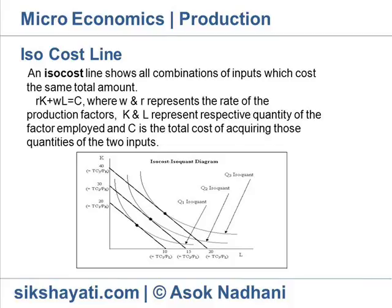Isocost line. An isocost line shows all combinations of inputs which cost the same total amount. The point of tangency between any isoquant and isocost line gives the lowest cost combination of inputs that can produce the level of output associated with that isoquant.